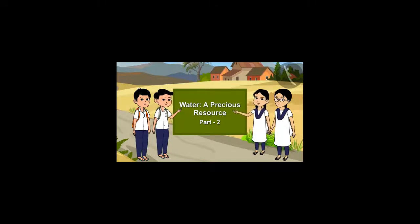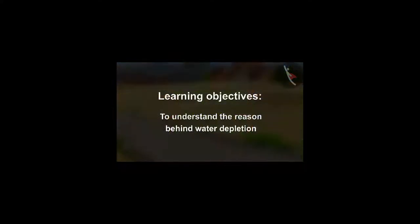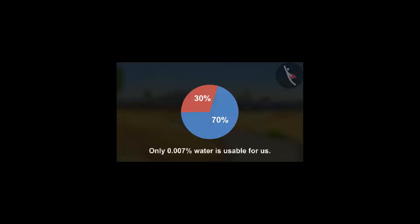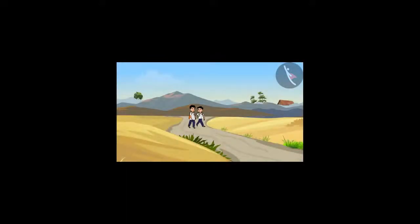Water: A Precious Resource, Part 2. Learning objective: To understand the reason behind water depletion. In the previous video, you learnt about the importance of water. You have also seen that although the earth is filled with 70% water, only 0.007% water is usable for us. You also know that the groundwater level varies in different places. Today, we will learn about the depletion in groundwater level and its reasons. Let us go back to Jugnu and Rajesh to learn more about this.